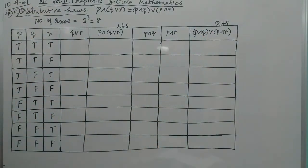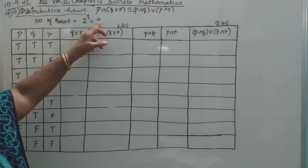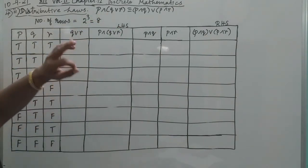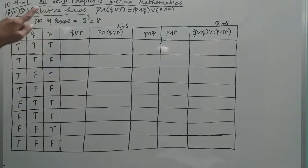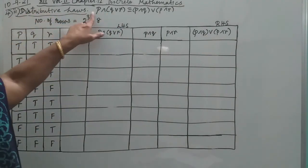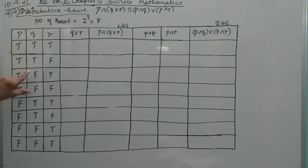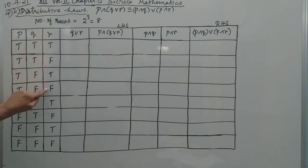Now, how do you do it? The total number of rows is 8. So there are 3 statements, giving 2 power 3 rows. Here is the pattern: 4T, 4F, then 2T, 2F, 2T, 2F, then 1T, 1F, 1T, 1F, 1T, 1F, 1T, 1F.